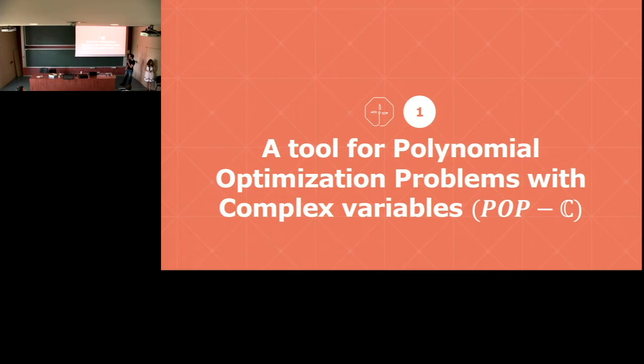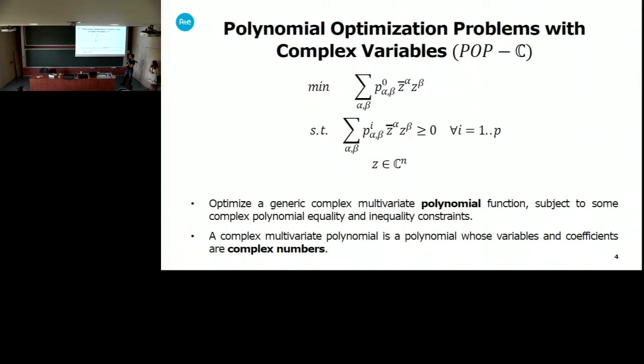First I'll present what we came up with for dealing with polynomial optimization problems with complex variables. Basically, it's just an optimization problem whose objective and constraint functions are polynomials in complex variables and with complex coefficients, with fixed upper and lower bounds on the constraints, which are also complex. One thing though is that usually the objective is real-valued, even though there are complex coefficients and complex variables.